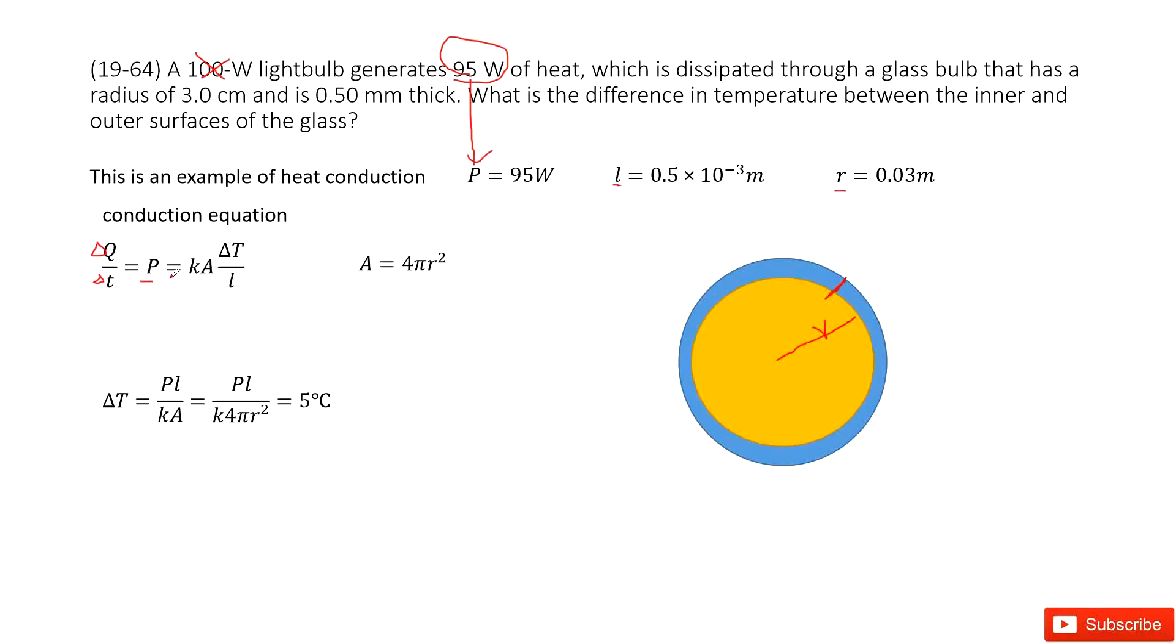You can see in this equation, P is given, K is a constant, delta T is our target and L is given. So it looks like we need to find the surface for this spherical light bulb, 4 pi r squared.